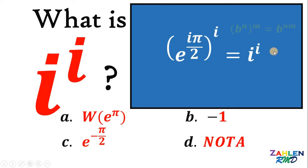Now, we will use again some laws of exponent. If we have b raised to n raised to m, it is equal to b raised to n times m. Thus, we can multiply iπ over 2 to i.